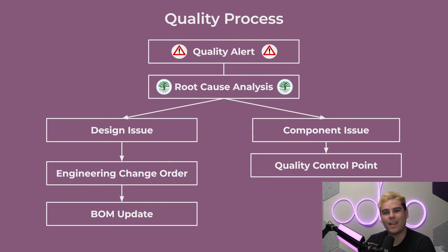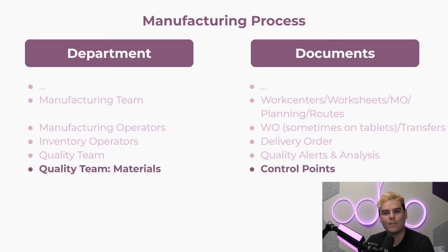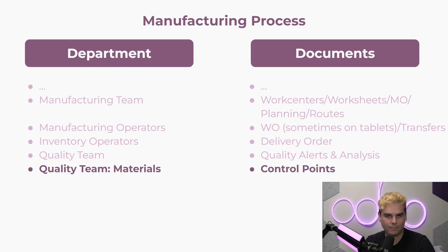Once the problem is diagnosed, teams can either change the components being ordered or configure a quality control point so that employees will check any future products or components for the same issue. Quality control points can be added anywhere during the manufacturing life cycle — from reception to production.